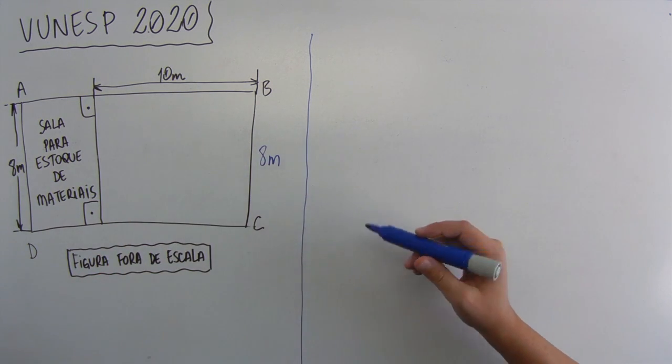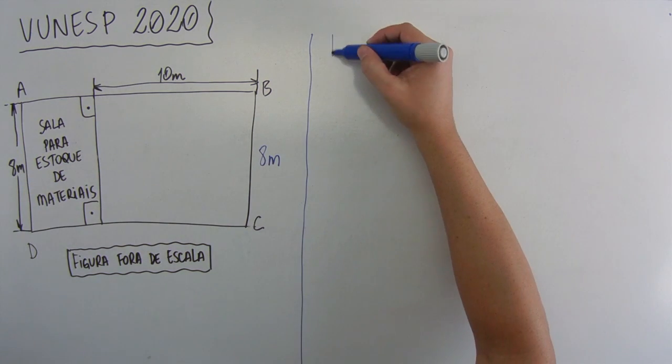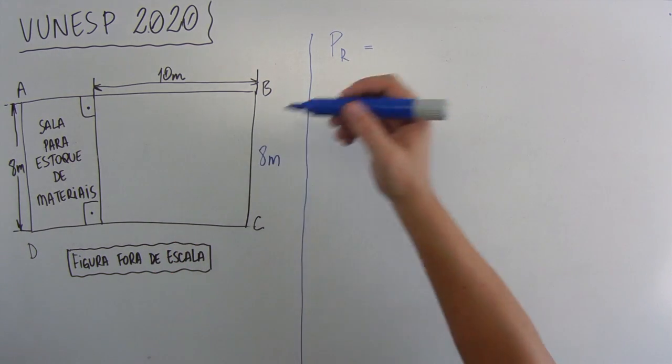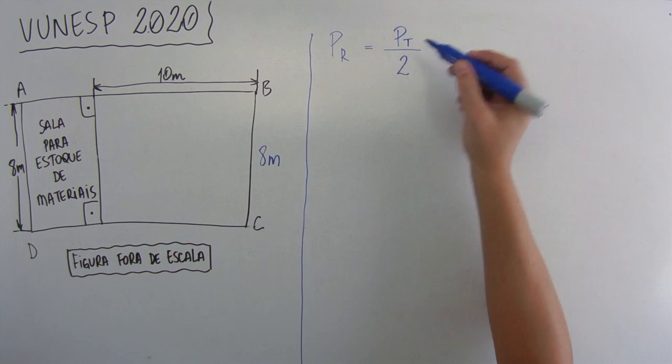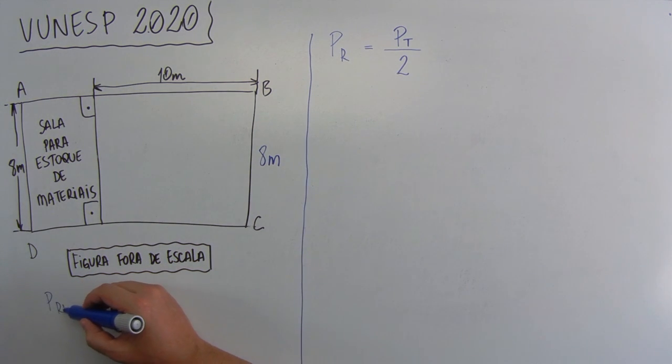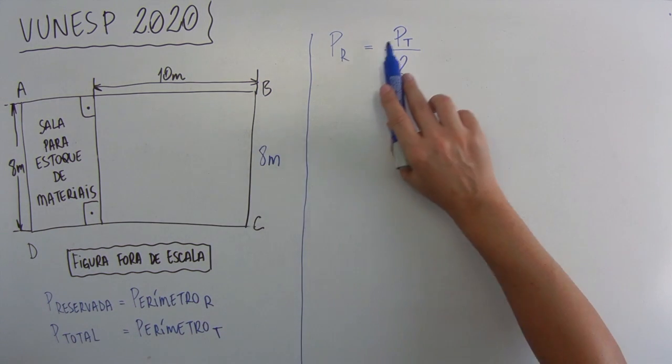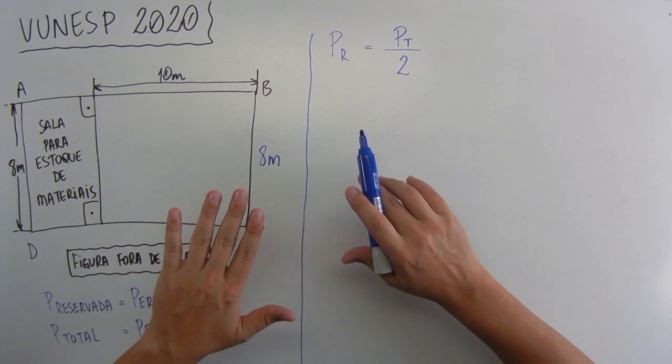A gente já viu a figura, vamos continuar lendo. Sabendo que o perímetro da sala reservada, então a sala reservada aqui, perímetro da sala reservada é igual à metade do perímetro da sala ABCD. Então, é igual à metade, o perímetro total da sala ABCD. Então, vou colocar aqui, perímetro da sala reservada. E aqui, perímetro total, que eu chamei de perímetro R e perímetro T. Tá aqui, abreviação, perímetro da sala reservada é igual ao perímetro total dividido por 2, ou a metade do perímetro total, isso que tá no enunciado da sala ABCD.